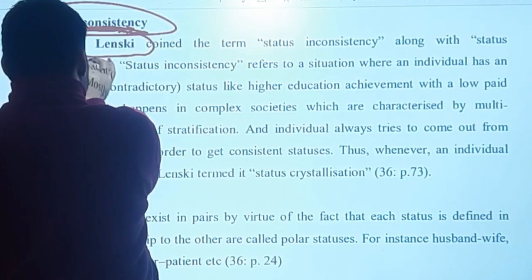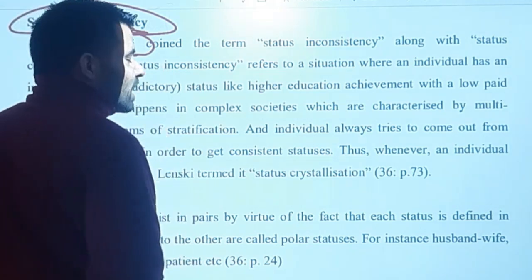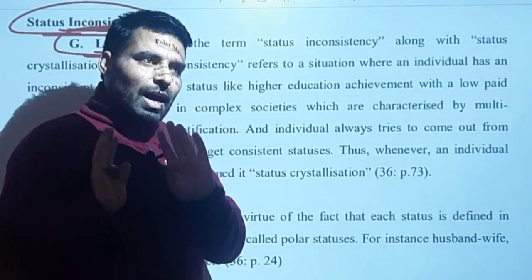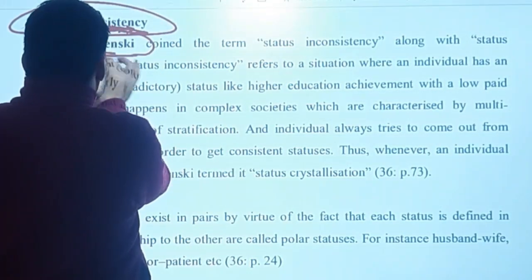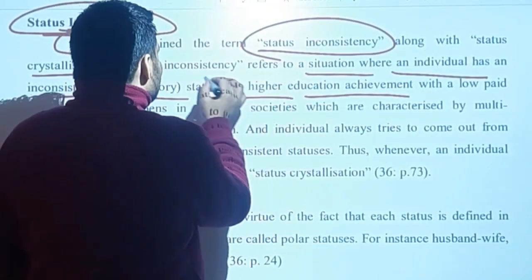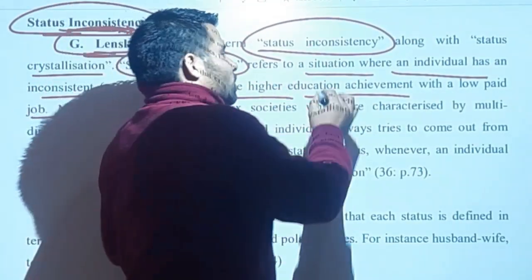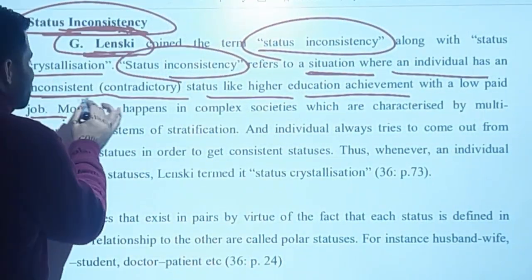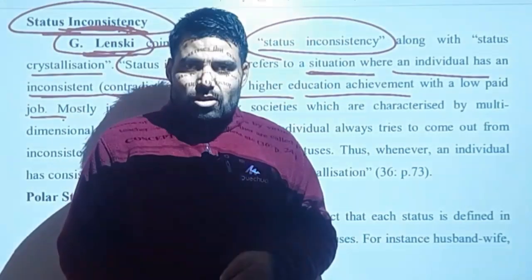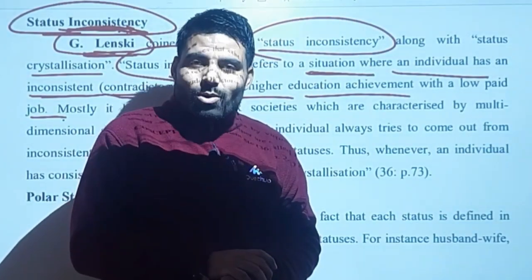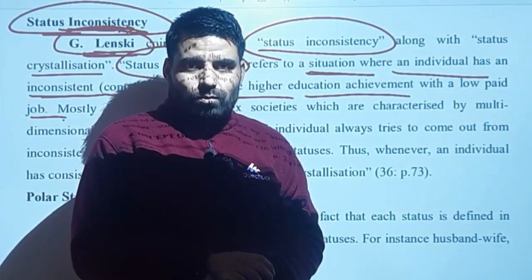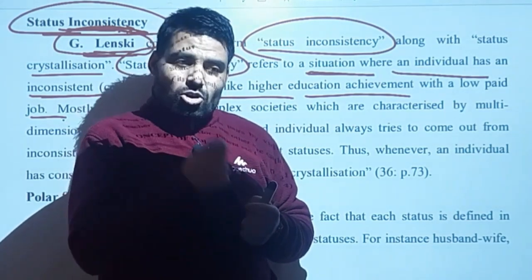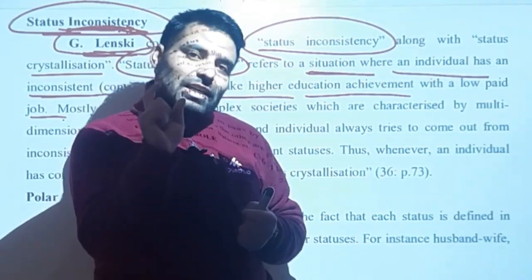The concept of status inconsistency was given by G. Lenski. You have to remember this for your exam, as it comes in entrance exams. Status inconsistency, as Lenski says, is that situation where an individual has an inconsistent and contradictory status. They have a status, but they are not satisfied with it — it is contradictory. For example, saying 'I have a PhD, why should I become a clerk? Why should I do low-level work?' — in that situation, a person is not satisfied with their job.